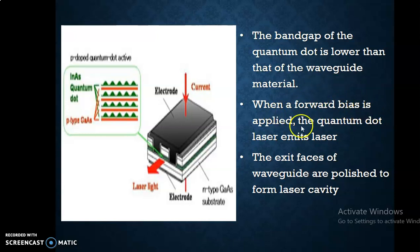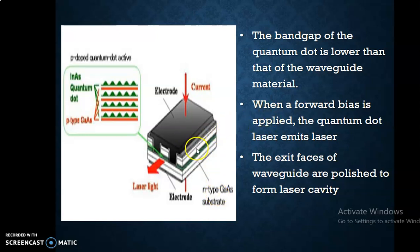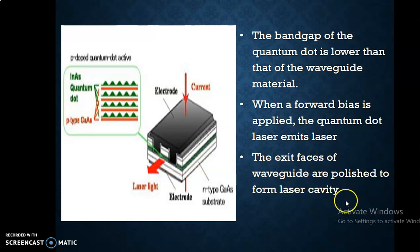When a forward bias is applied — meaning the P-type is connected to a positive potential and the N-type gallium arsenide to the negative potential — the stimulated emission process begins, so that the quantum dot emits laser light. This emitted light comes out through the exit faces of the waveguide. The exit faces of the waveguide are well polished, so they act as a laser cavity, and the laser light comes out only through these end faces.